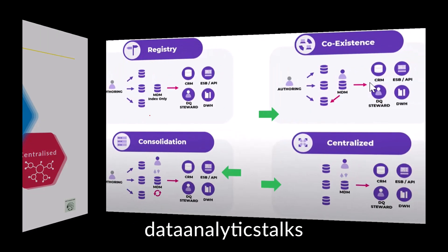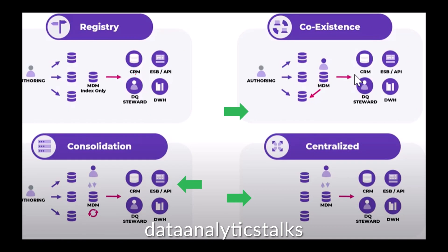Let's look at each one. First, coexistence. The master data entities co-exist in both the hub and the source system with a two-way synchronization between the two. Master data entities can be created or updated either in the hub or the source system. The MDM hub standardizes, cleanses, enriches, and deduplicates the master data and pushes the data back to the source system to rationalize the master data held. This MDM system manages cleanliness, enrichment, and deduplication of the master data.